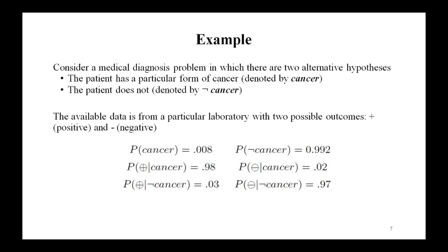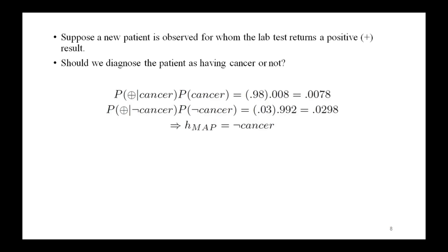We have prior knowledge that over the entire population only 0.008 have this disease, so P(cancer) = 0.008 and P(¬cancer) = 0.992. The conditional probabilities are: P(+|cancer) = 0.98, P(−|cancer) = 0.02, P(+|¬cancer) = 0.03, and P(−|¬cancer) = 0.97. Suppose we observe a new patient for whom the lab test returns a positive result. Should we diagnose the patient as having cancer or not?